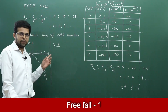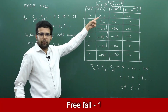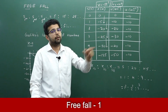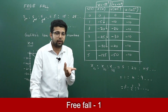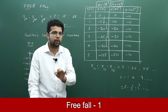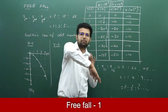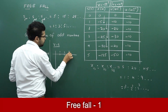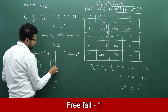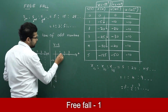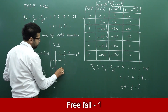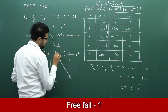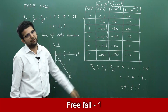For the V-t graph, if you look at the equation v = minus 10t, it is in the form y = minus mx, which is a straight line with no y-intercept, so the graph starts from the origin with a negative slope. Plotting the points: t=1s gives minus 10, t=2s gives minus 20, t=3s gives minus 30 — it is a straight line with slope minus 10, which is the acceleration due to gravity.